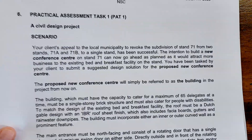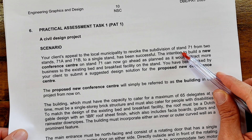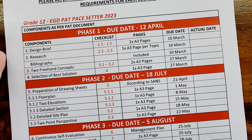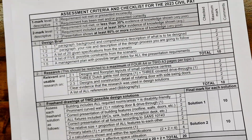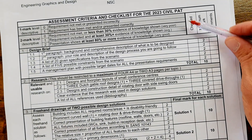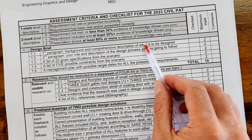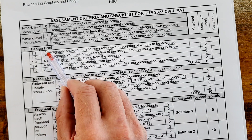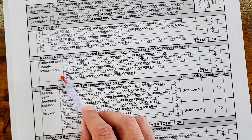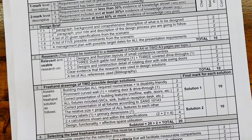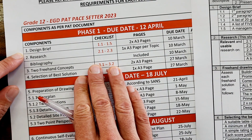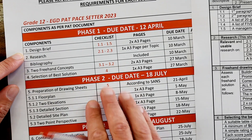I've taken the PAT document, which all of you would have received by now — there's a download link in the description for you to check this out. I've taken the formal checklist from that document — this is your checklist that's going to help you meet all the different requirements in each topic. I've then paired this up with the due dates in this pace setter to help you keep up.